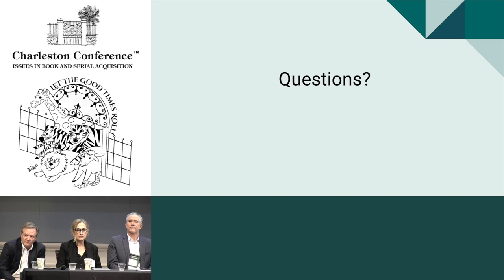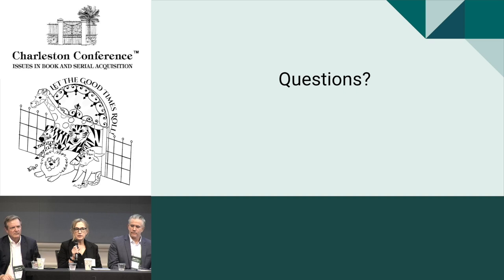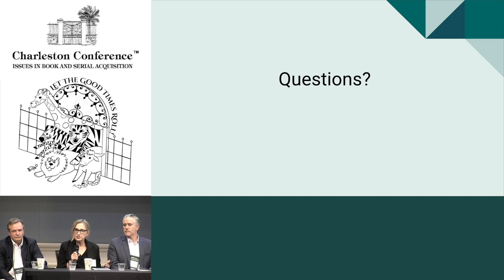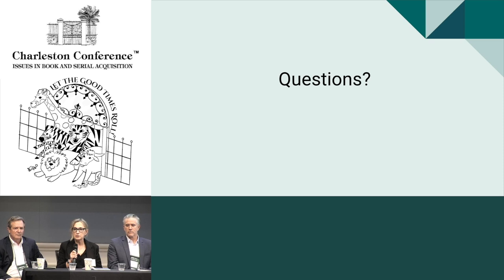Authors represent that third leg on the stool — what can these models do to help push what impact factor for books might eventually look like or how it might be measured, because that's still an open question. What excites me about open access is there is a desire and demand for transparency, and I think that's going to get us to more of these answers faster than we have in the past. Part of our job as aggregators is to be transparent about the results of what we're doing.